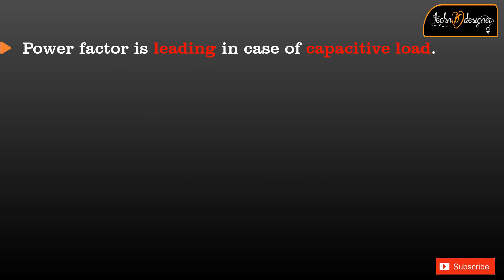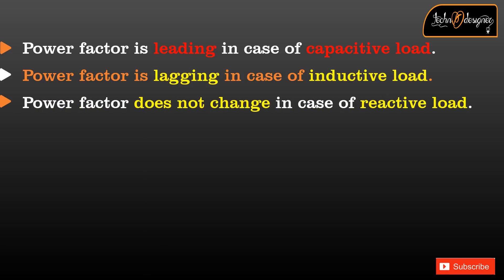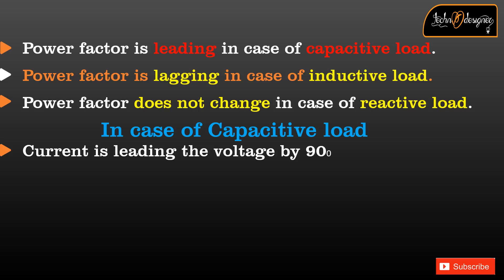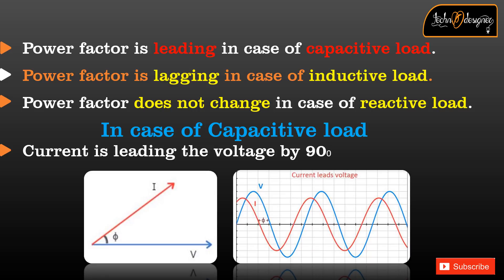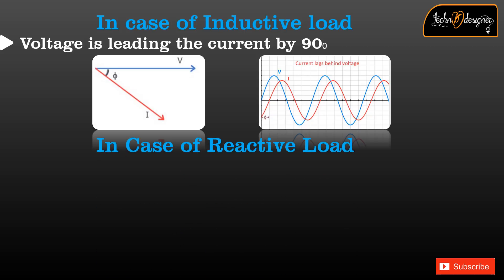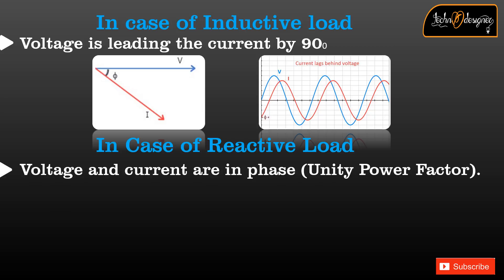Power factor is leading in the case of a capacitive load, and lagging in the case of an inductive load. Power factor does not change in the case of a resistive load. In a capacitive load, current leads voltage by 90 degrees. In an inductive load, voltage leads current by 90 degrees. In a resistive load, voltage and current are in phase — this is unity power factor.